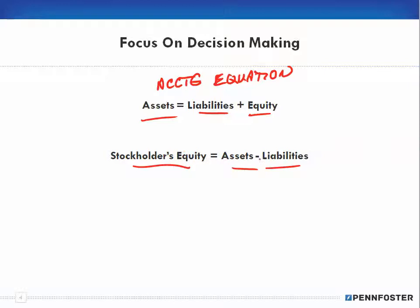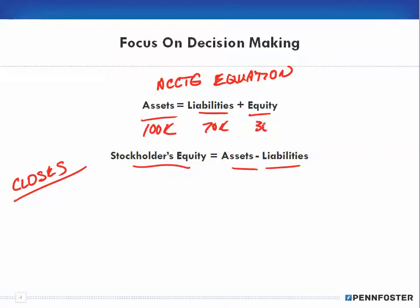What is important about understanding stockholders equity is whether the business is an ongoing concern or when you close the business. To get perspective, let's talk about when the business closes. Let's say there's $100,000 in assets, $70,000 in liabilities, and $30,000 in equity — so assets of $100,000 minus liabilities of $70,000 gives you $30,000 in equity. But just looking at that and saying stockholders equity is $30,000 is a little naive — that's only what it says on paper.